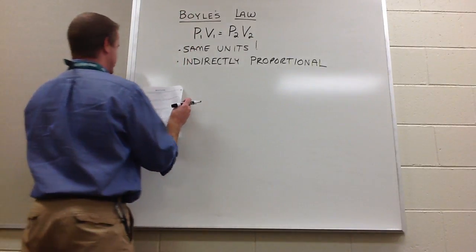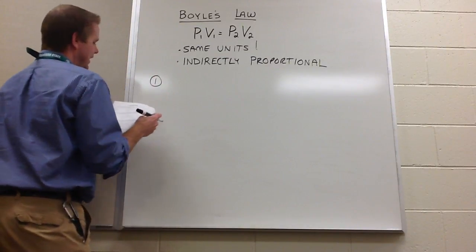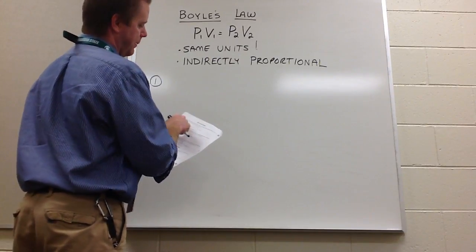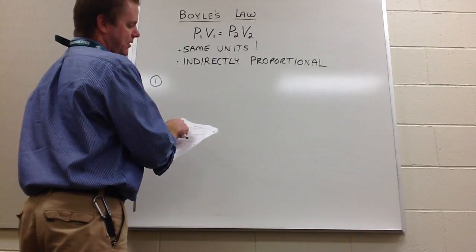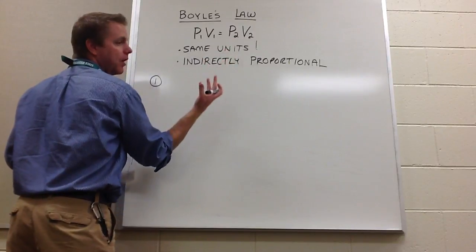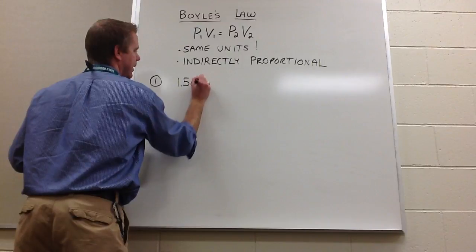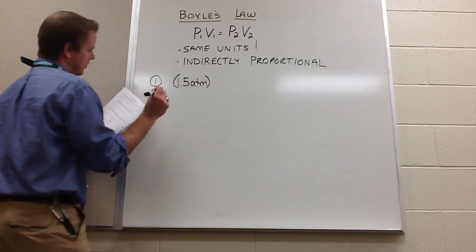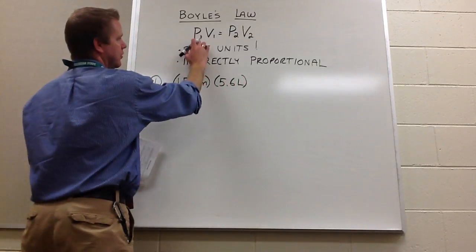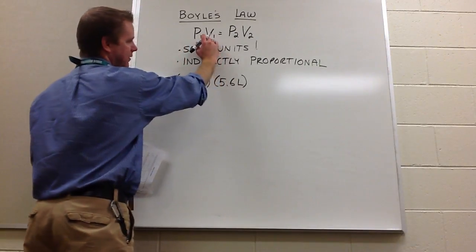Let's do this first problem. If I have 5.6 liters of a gas in a piston at a pressure of 1.5 ATMs, I realize that the 5.6 liters and the 1.5 ATMs are together. So 1.5 ATM times 5.6 liters — ATM being a measure of pressure, it's the standard pressure, and 5.6 liters being the volume.